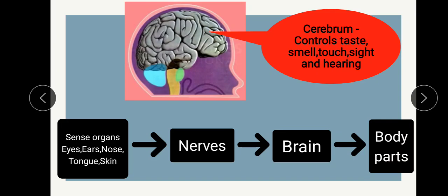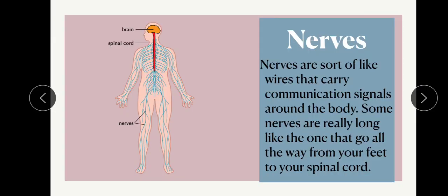It is sent through what are called nerves. The sense organ sends the information or communication signal to the brain through nerves. Nerves are wire-like structures covering all over your body, the spinal cord, and also the brain. These all together make up what is called the nervous system, which works together to transfer information from one part to another.